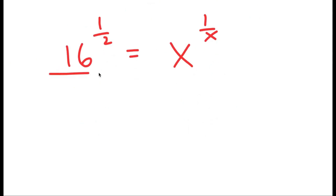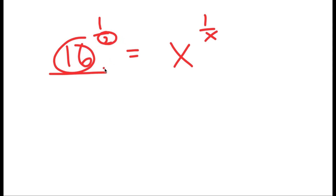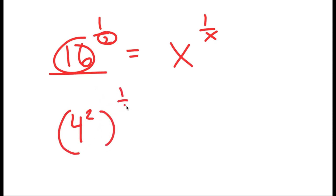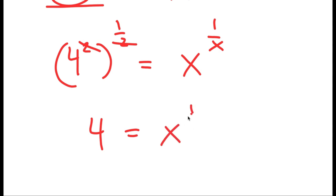My goal is to turn the left side into the form of some number to the power of 1 over that number, so I can identify the solution. This means 16 and 2 need to become the same number. Since 16 equals 4 squared, I rewrite it as 4 squared to the power of 1 half. The 2 times 1 half equals 1, leaving 4 equals x to the power of 1 over x.